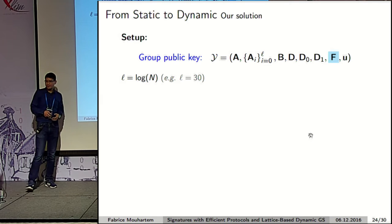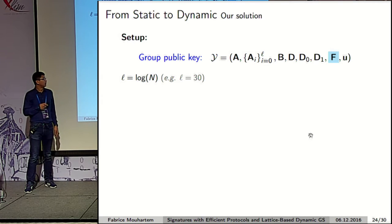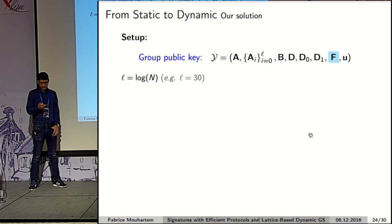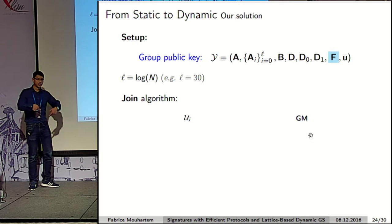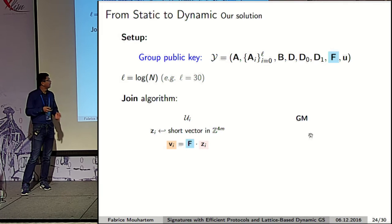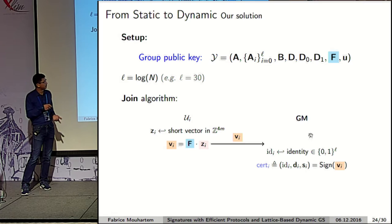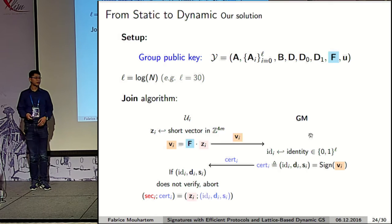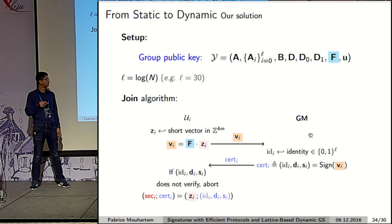For the construction, we first generate public parameters — the matrix and vector from our signature scheme with efficient protocols. The join algorithm works as follows: the user computes a short integer vector and computes the corresponding public syndrome, then sends this public syndrome to the group manager, who signs it using our signature scheme with efficient protocols. The tag of the signature scheme is treated as the user's identity. This signed value is sent back to the user as the membership certificate, and the user verifies that it is indeed a valid signature for the syndrome and saves it.